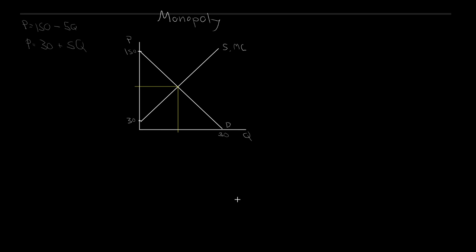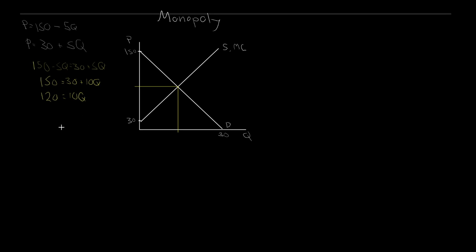To solve for the competitive equilibrium, we set supply equal to demand: 150 minus 5Q equals 30 plus 5Q. Consolidating, we get 150 equals 30 plus 10Q, then subtract 30 from both sides: 120 equals 10Q, giving us Q equals 12. So if this market was serviced by perfectly competitive firms — that is, if this market was allocatively efficient — we would have a quantity exchanged of 12.